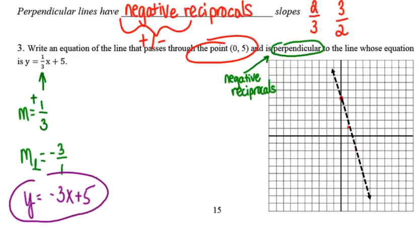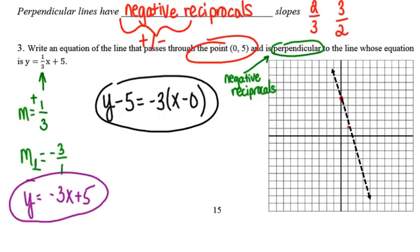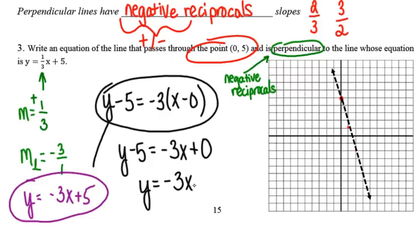If I don't want to take the time to draw the graph and want to solve it algebraically, I can say y subtract the given y-coordinate, which is 5, is equal to the slope that I want, negative 3, times x subtract the given x-coordinate, which is 0. Either of those I just circled represent correct answers. If you want to take this equation in point-slope form and convert it to slope-intercept form, you're simply going to distribute the negative 3 on the right-hand side and add 5. Either one of those is a correct and complete solution to that problem.